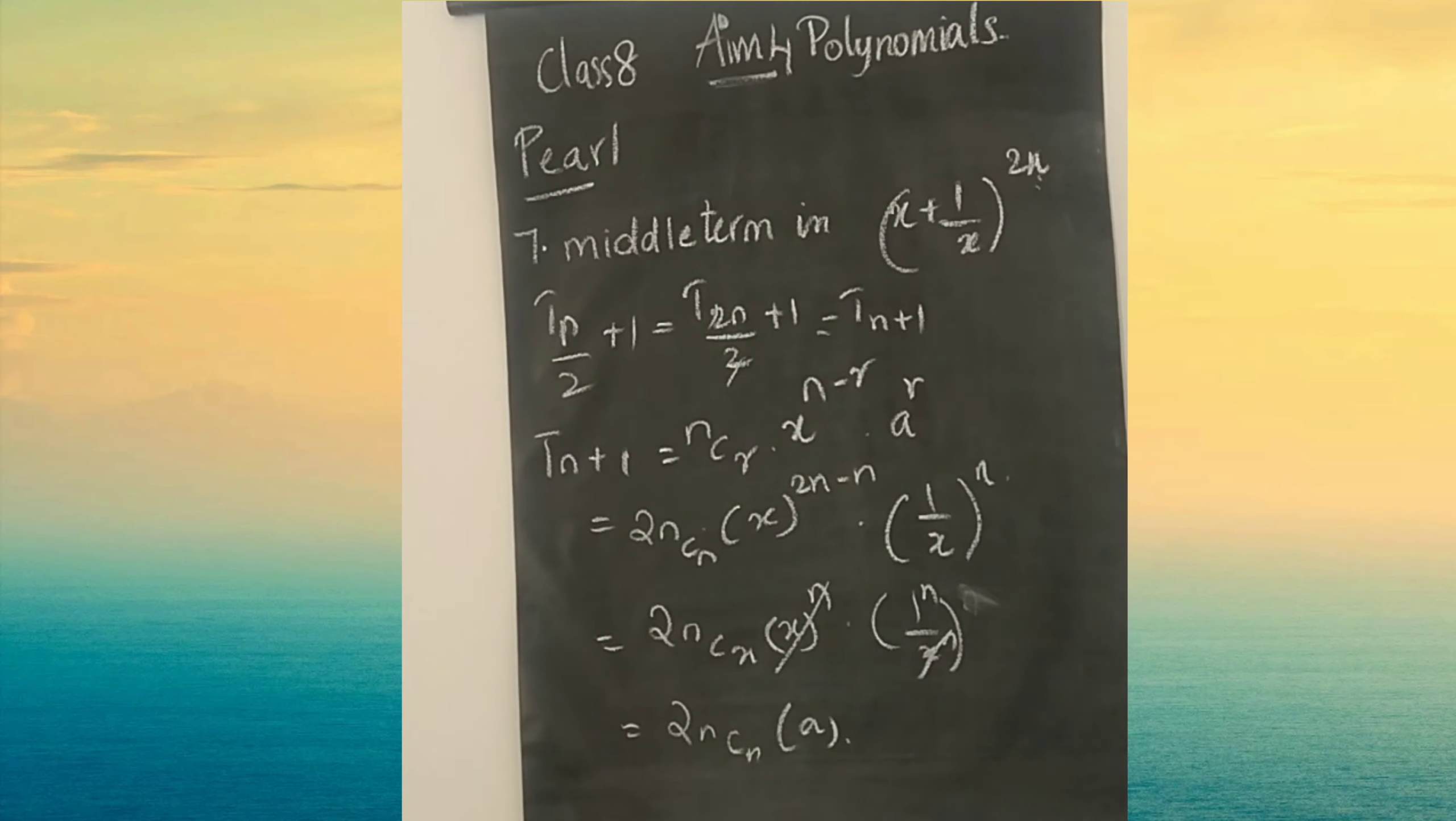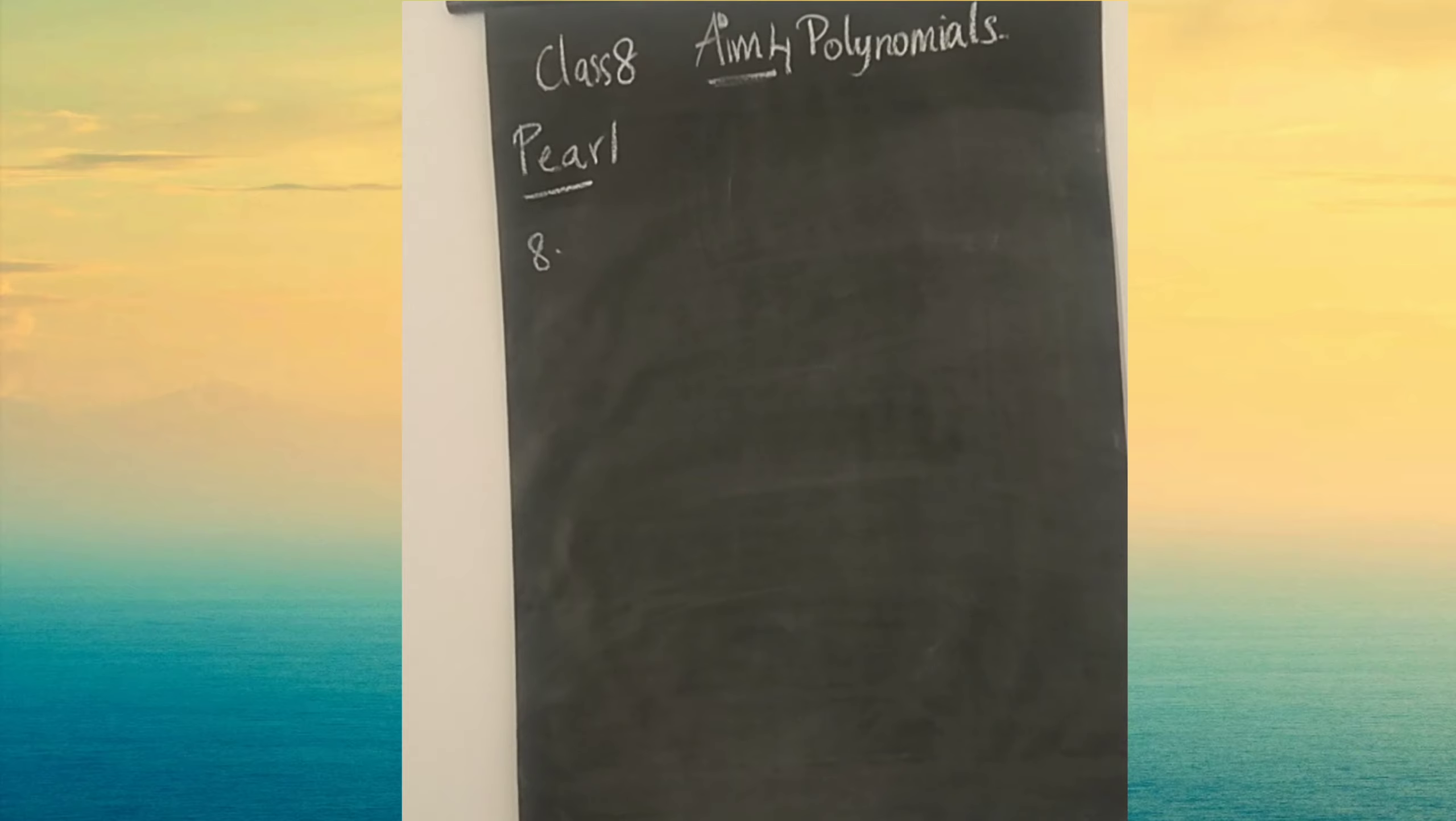Eighth question: the term assertion A states the term independent of X in the expansion X plus 1 by X plus 2 whole power 21 is 42C21. This is correct. A is true. Reason R: in the binomial expansion the middle term is independent of X. That is wrong. Reason is false, option C.